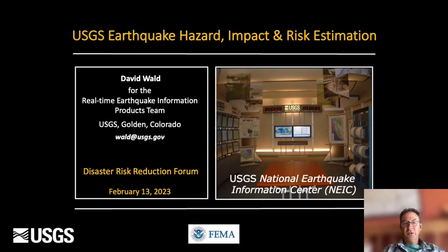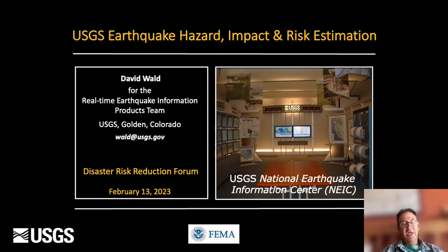Hello, I come to you from the USGS National Earthquake Information Center in Golden, Colorado. What I'll cover today is the important notion that the products we produce for real-time earthquake information — the shaking hazard and impact — are actually the key ingredients that can be used in a probabilistic realm for looking at risk and risk reduction. I'll take you through some of the real-time products and show you how they're related to our long-term risk mitigation.